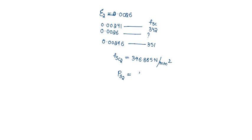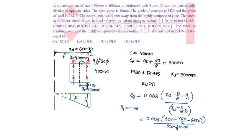So the force in bars at level 2 will be stress times area of bars, equal to 346.885 times 2 bars of 20mm diameter. That is 346.885 times 2 times 314, which equals 217.8 kN, nearly 218 kN. So our answer is option C.